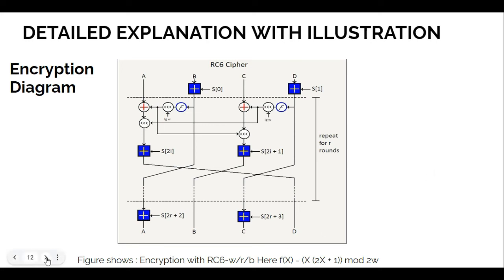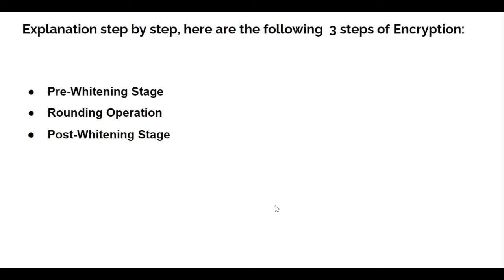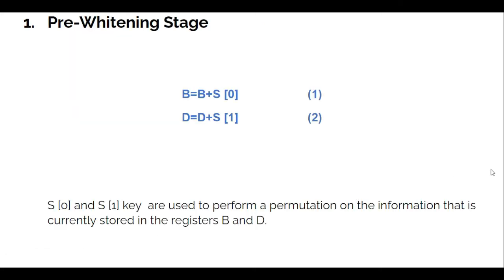For the next, I will explain step by step for the encryption process. Here, there are three following steps of encryption, which is the first pre-whitening stage, rounding operation, and post-whitening stage is the last one. Let's start with the pre-whitening stage first. Here we got two steps: B equals B plus S0, D equals D plus S1. S0 and S1 are used to perform a permutation of the information that is currently stored in the registers B and D. The objective of this process is to eliminate all the possible inferences regarding an element of the information that will be fed into the first round of encryption.